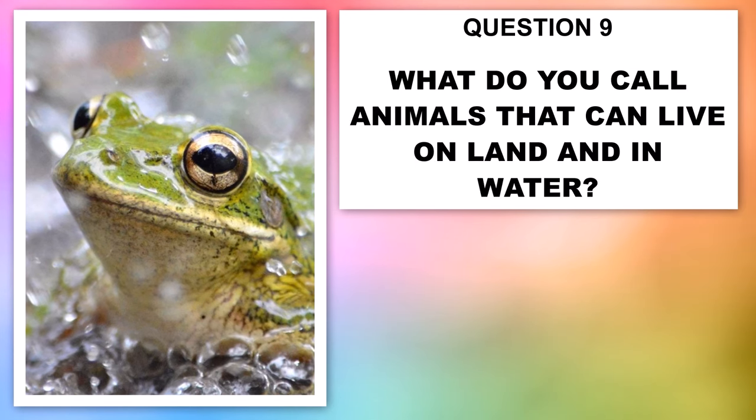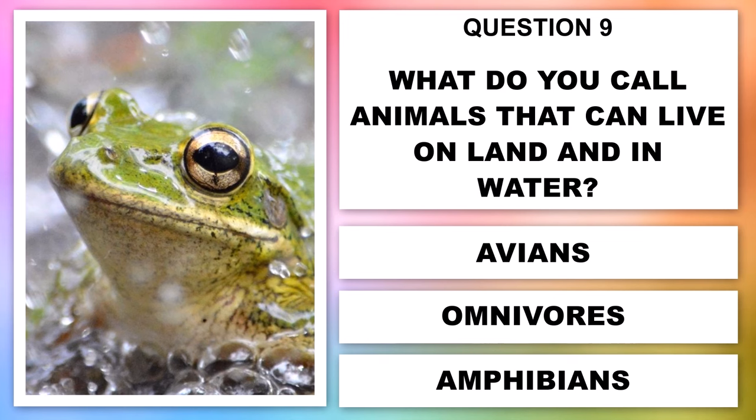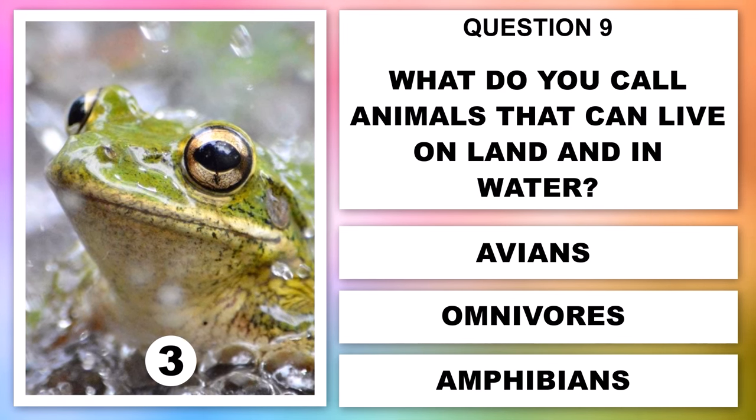What do you call animals that can live on land and in water? Avians, omnivores or amphibians?